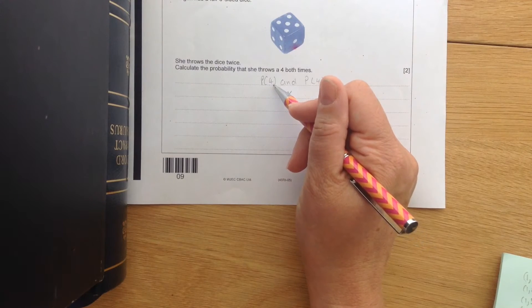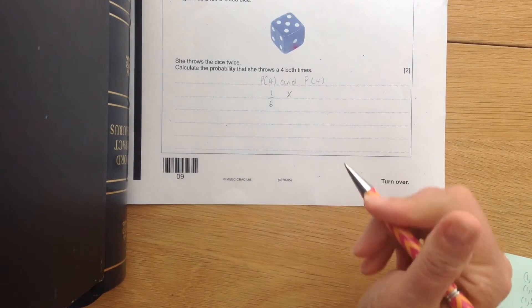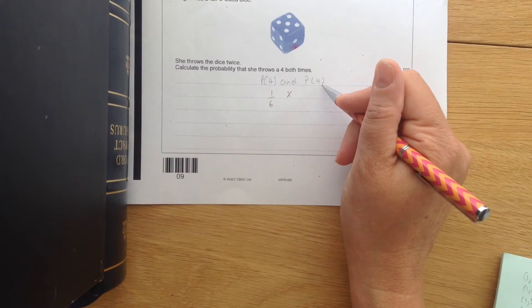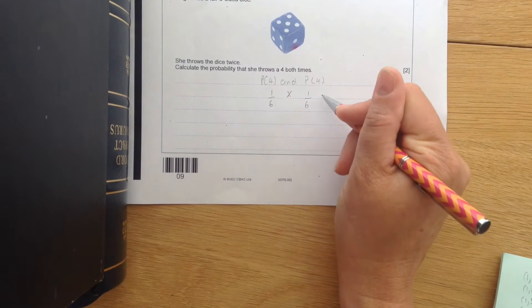So the probability of getting a four on her first roll is one over six. And the probability of getting a four on her second roll is also one over six.